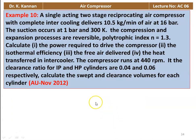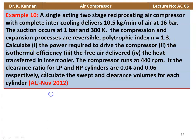Example number 10 from the November 2012 question paper. A single-acting two-stage reciprocating air compressor with complete intercooling delivers 10.5 kg per minute of air at 16 bar. Suction occurs at 1 bar and 300 Kelvin. Compression and expansion are reversible polytropic with n equal to 1.3. Calculate the power required to drive the compressor, isothermal efficiency, free air delivered, heat transfer in the intercooler, and the stroke volume and clearance volumes of each cylinder. Clearance ratios for LP and HP cylinders are 0.04 and 0.06 respectively. Speed is 440 rpm.